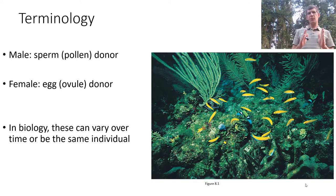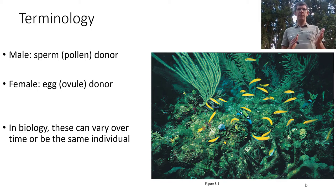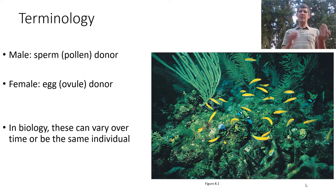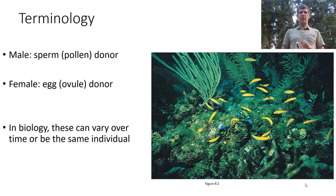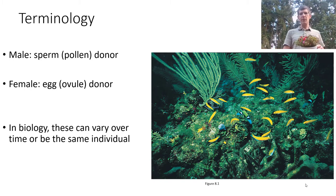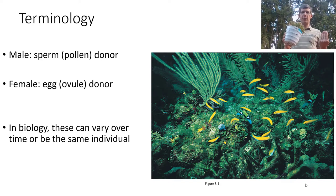Let's start with some terminology. These are loaded terms in today's culture, but we'll simplify: 'male' means the sperm donor or pollen donor, and 'female' means the egg donor or ovule donor, depending on whether you're talking about plants or animals — and this can change over time. For example, wrasse fish can turn from male to female, and some flowers have both male and female parts, so we can refer to them as either or both.